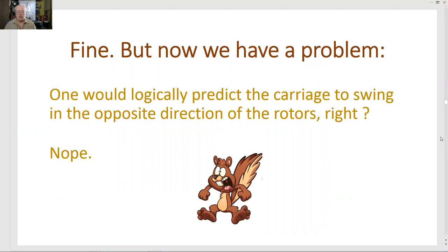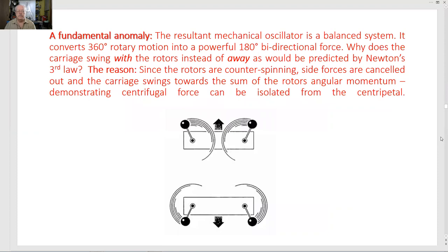Fine, but now we have a problem. One would logically predict the carriage to swing in the opposite direction of the rotors, right? Nope. So, a fundamental anomaly. The result of a mechanical oscillator is a balanced system. It converts 360-degree rotary motion into a powerful 180-degree bidirectional force. Why does the carriage swing with the rotors instead of away as would be predicted by Newton's third law?